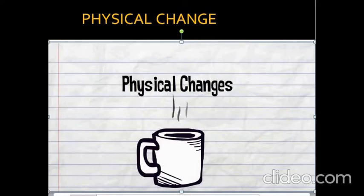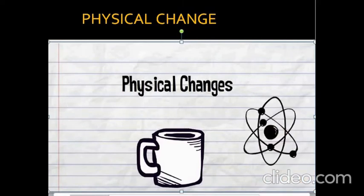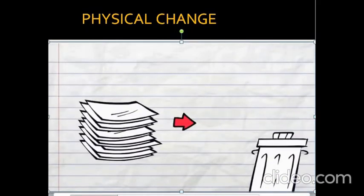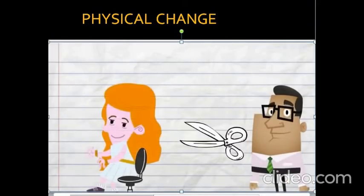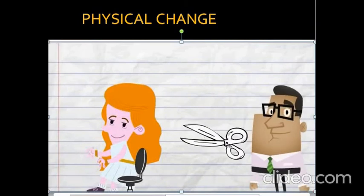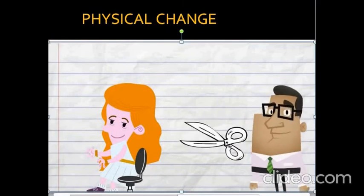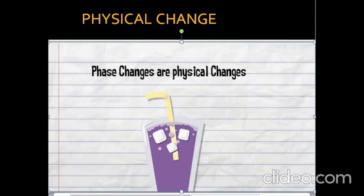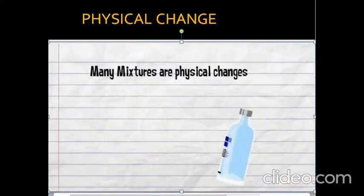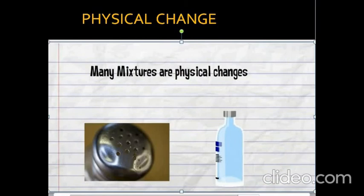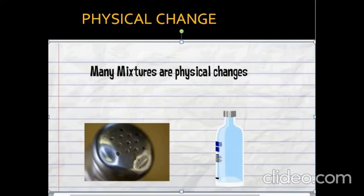Physical changes are changes in appearance only, and no new substance is created. Chemical bonds are not formed or broken. For example, cutting a stack of paper into smaller pieces is a physical change — it still has the same properties. Cutting someone's hair is also a physical change because the hair retains the same properties. Phase changes are physical changes: when ice goes from solid to liquid to gas and back to water, those are all physical changes. Most mixtures involve physical changes — for example, mixing salt and water is a physical change because the salt and water can be separated out later.